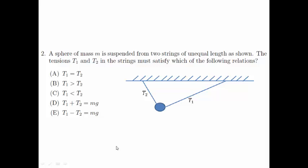Welcome to Singapore Junior Physics Olympiad 2012, Question 2. A sphere of mass M is suspended from two strings of unequal length as shown. The tensions T1 and T2 in the strings must satisfy which of the following relations?